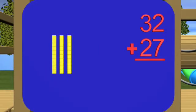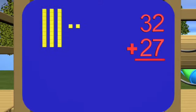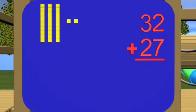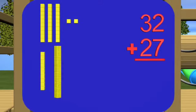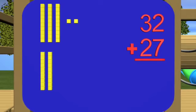Then, in ones place, 2. So, 2 ones blocks. Next, 27. 2 tens. Take 2 ten blocks. And 7 ones block.